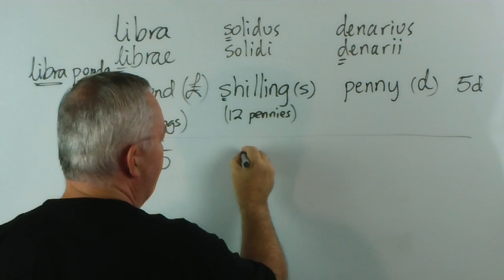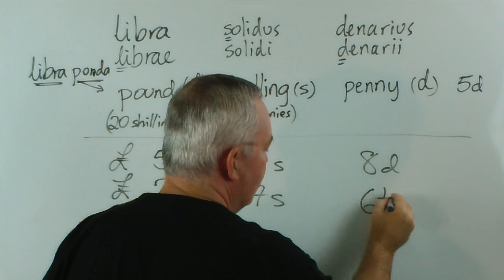So, let's draw a line here and let's do an addition. Let's imagine I have five pound, fifteen shillings and eight pence. And to it I'm going to add two pound, seven shillings and let's make it six pence, halfpenny. How about that, where they had half coins, half pennies, called halfpennies.